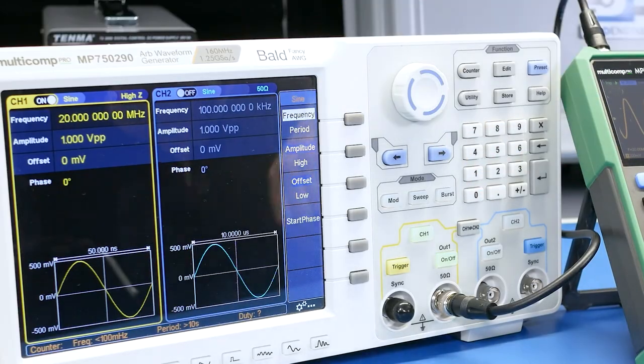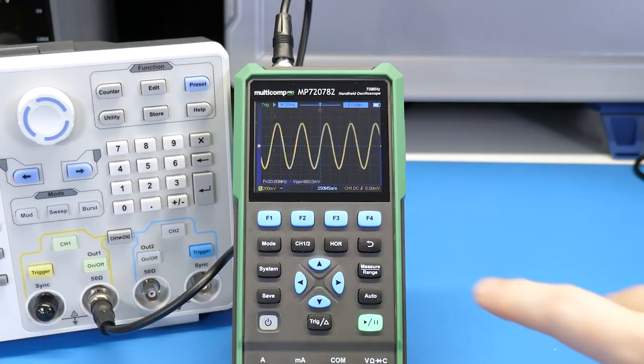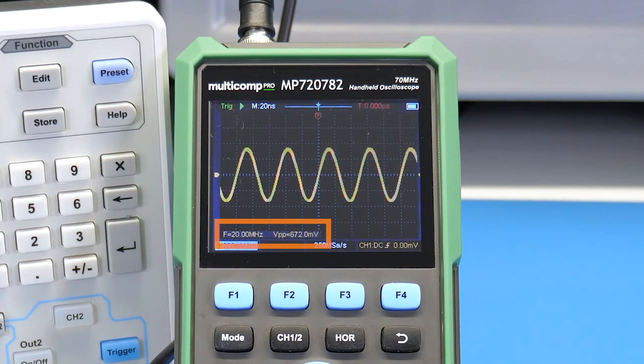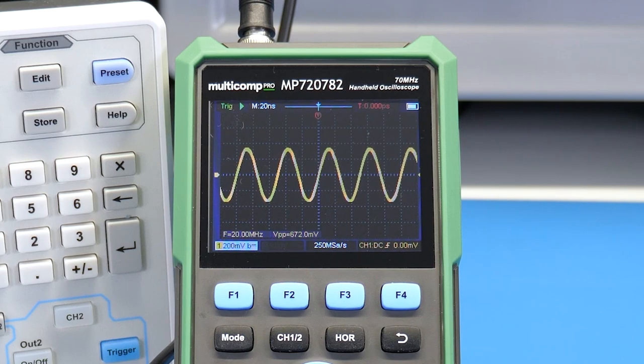With the sine wave at 20 MHz, the amplitude is a little less. If I turn on the built-in 20 MHz filter, the voltage drops down to around 670 mV peak to peak, which is roughly the 30% drop we'd expect with a 20 MHz low pass filter.